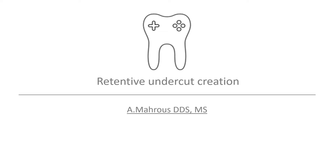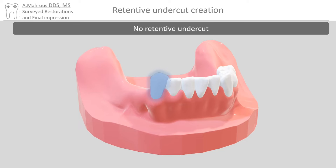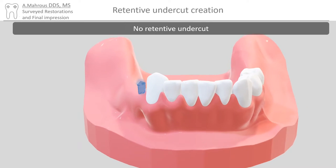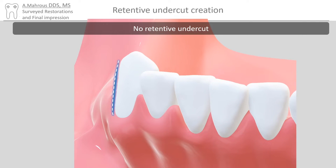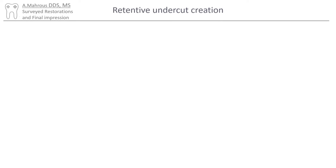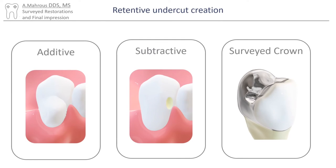Hello and welcome to another RPD video. Today we'll be discussing retentive undercut creation. It is not uncommon to find abutment teeth with no retentive undercuts. Cases such as this can be challenging to treat with partial dentures. There are three ways by which undercuts can be created on abutment teeth: an additive method, a subtractive method, and fabricating a surveyed crown.